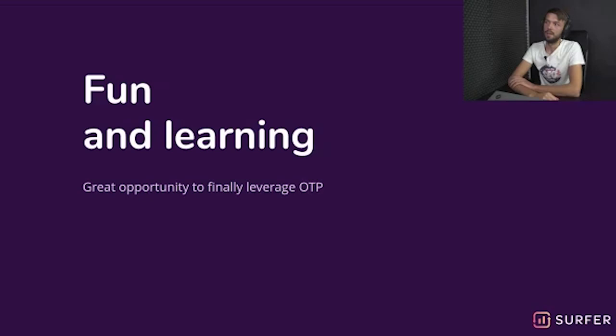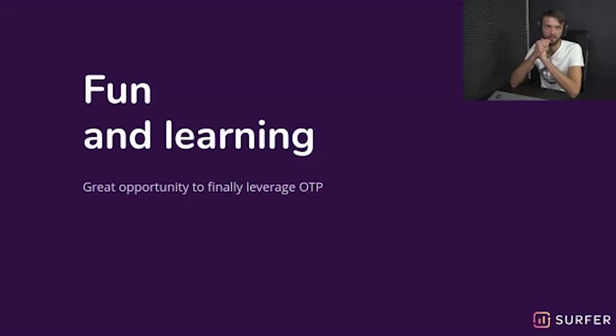For distributed tasks we always used RabbitMQ, and while Rabbit is built in Erlang and uses OTP, we never used OTP as-is — the raw OTP. I always wanted to figure out what's possible, how it solves the problems of distributed programming. It turned out I didn't know how good OTP is and how well the abstraction is designed.